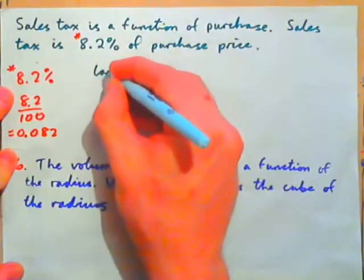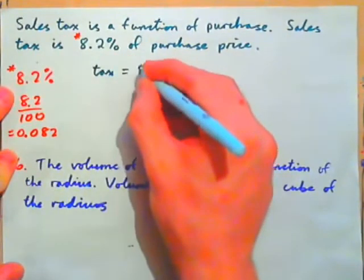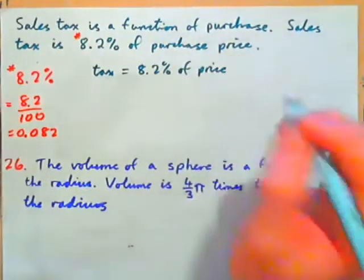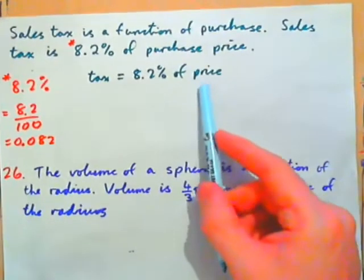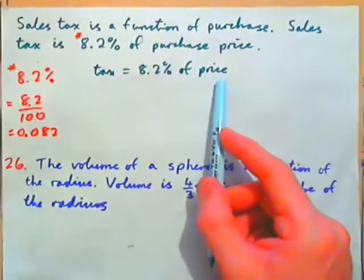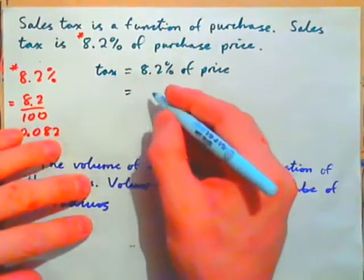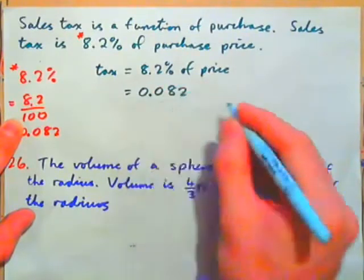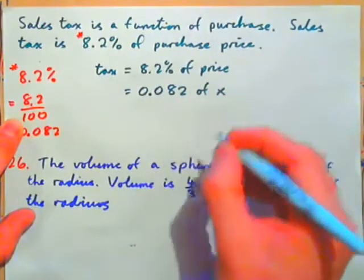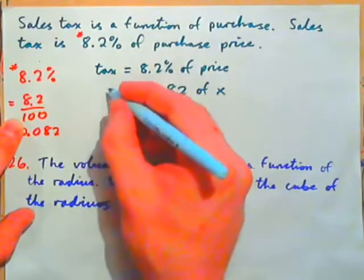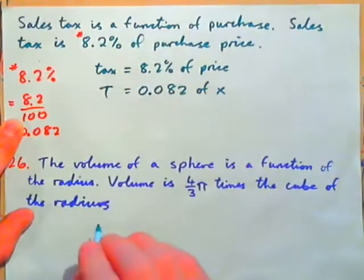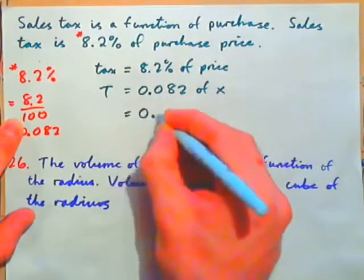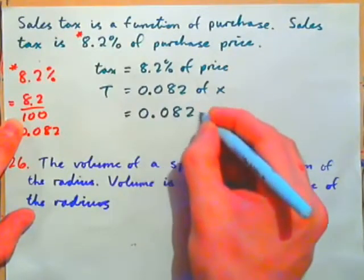Now, sales tax is 8.2% of purchase price. So, you could say that the tax equals 8.2% of the price. What's the input? What's the output? Well, your price is your input, isn't it? So, your price would probably be x, and this is 0.082. So, 0.082 of x. And tax we could write as T with a big T. So, what we have is T equals that of x. Now, that means multiply, so that's 0.082 times x.